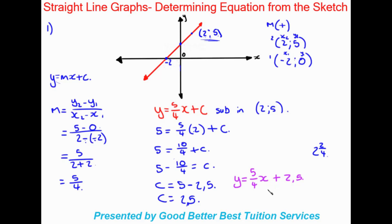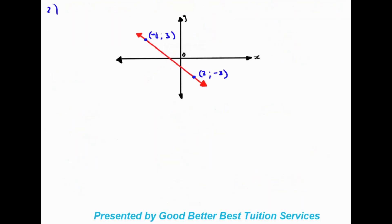So that was the first example. Important things to note: we first work out the gradient and confirm it's positive from the graph. Then we write out the equation with the gradient included. After that we substitute in any one of the two given points, work out c — the y-intercept — and finally write out our complete equation.